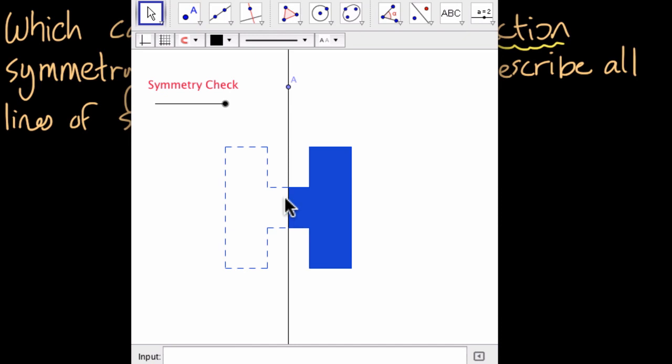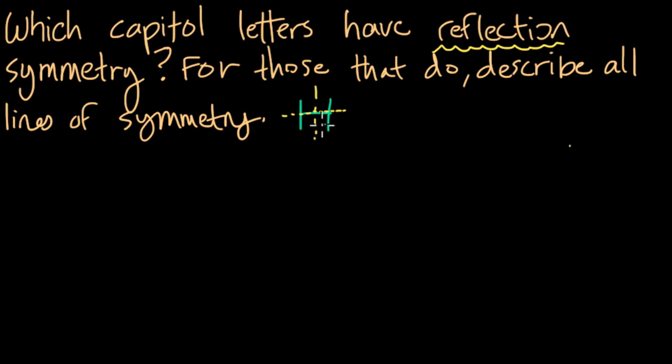Now the letter H has two lines of symmetry, and we're just showing one right here. This is a vertical line of symmetry. And also, I'm sure you can imagine it having the horizontal line of symmetry right here. So we can say that the letter H has two lines of symmetry.